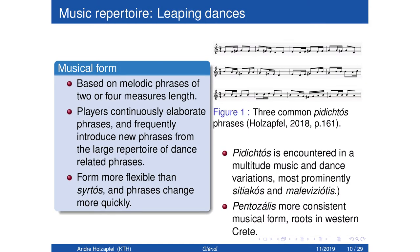On the other hand, we have leaping dances, which are a musical form based on melodic phrases of two or four measures length. And the players here in this form continuously elaborate the phrases and frequently introduce new phrases from the large repertoire of dance-related phrases. And compared to the sirtos, this form is more flexible because it does not have this fixed A-B structure that is necessarily repeated to some extent, but it provides a large degree of freedom to the musician to also react to the dancers.